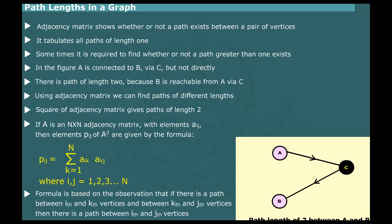The formula is based on the preceding observation that if a path exists between the i-th and k-th vertex, and there is path between k-th and j-th vertex, then there is a path of length 2 between i-th and j-th vertex.